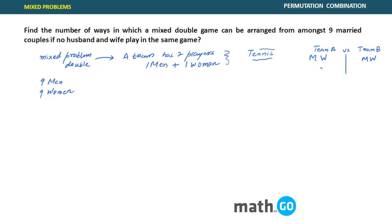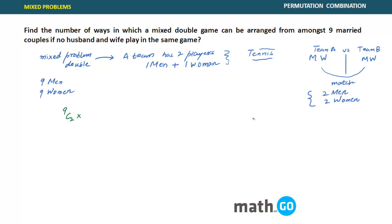For a particular match, two men and two women are required. Let's start with picking men. Out of nine men, I select two men — that can be done in 9C2 ways. I have selected the men.